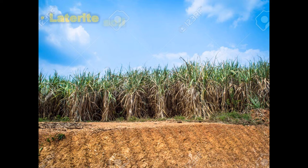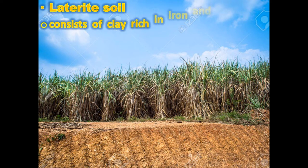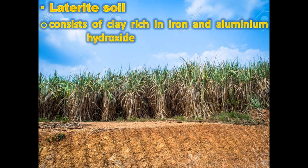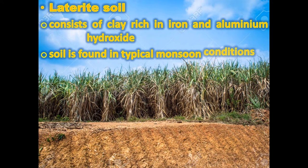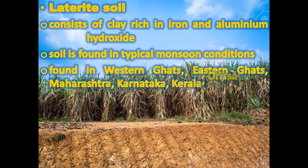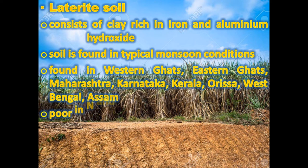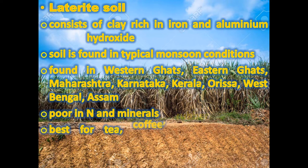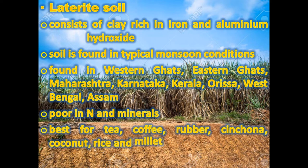Laterite soil consists of clay rich in iron and aluminium hydroxide. It is found in typical monsoon conditions in Western Ghats, Eastern Ghats, Maharashtra, Karnataka, Kerala, Odisha, West Bengal, and Assam. It is poor in nitrogen and minerals and is best for cultivation of tea, coffee, rubber, chinchona, coconut, rice, and millet.